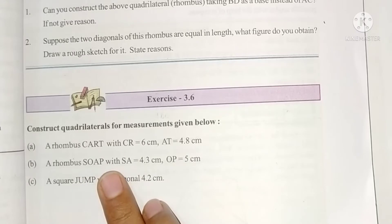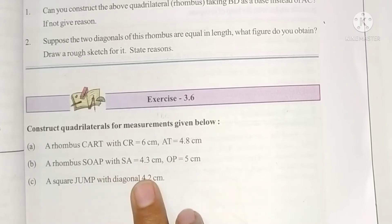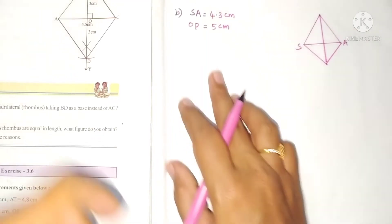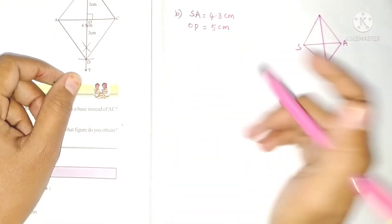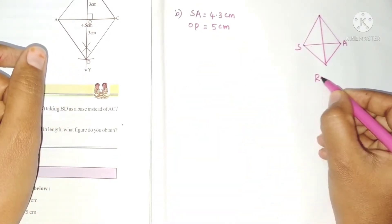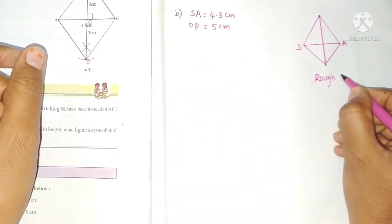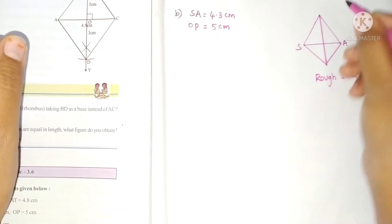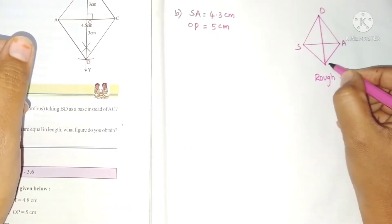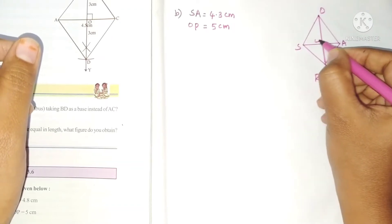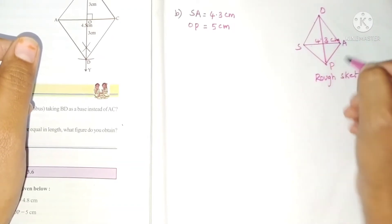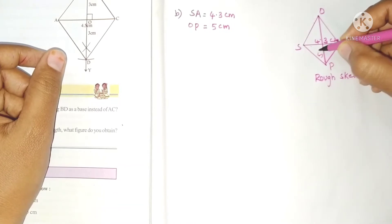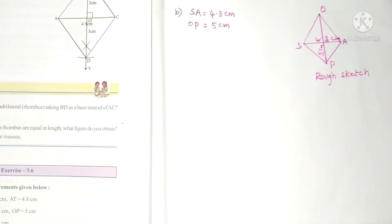Second problem: construct a rhombus SOAP with SA and OP as the two given diagonals. These are the given measurements and the rough sketch is drawn. One diagonal SA is 4.3 centimeters and the second diagonal OP is 5 centimeters.